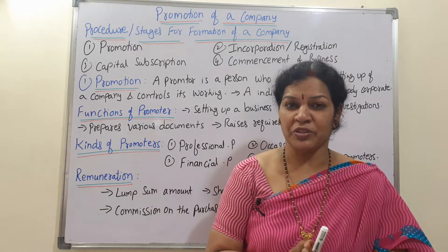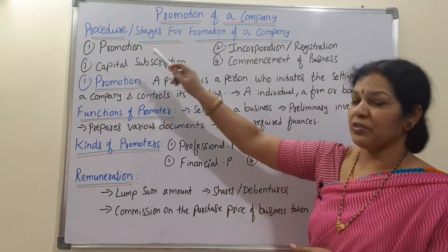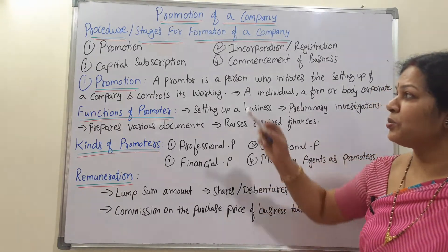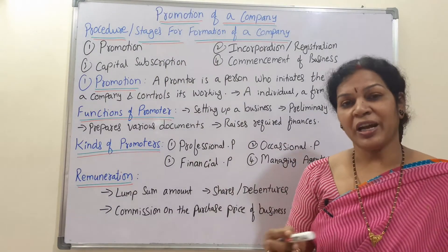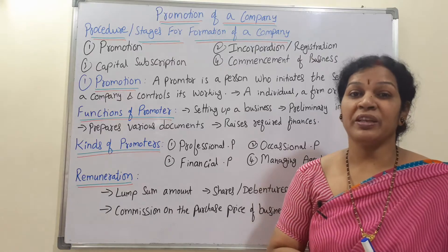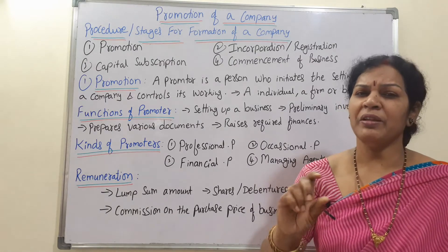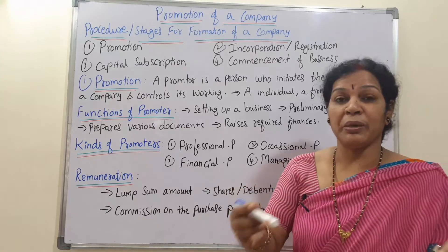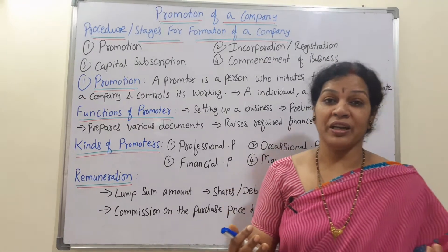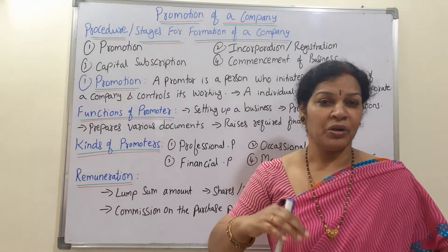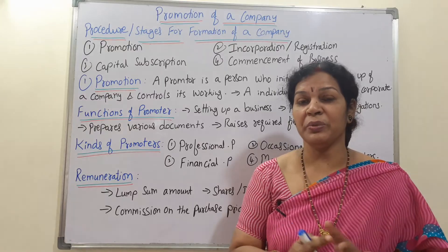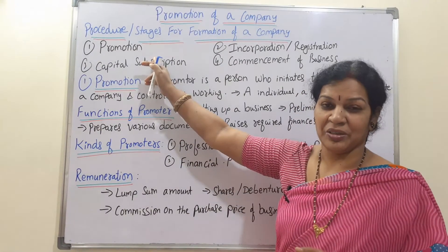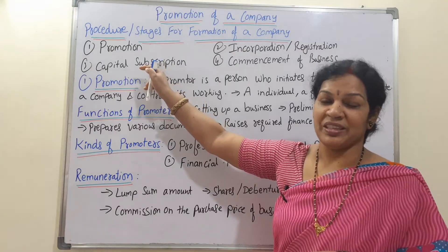If you see the procedure or stages of formation of a company, there are total four stages. The first one is promotion. Before starting the company, we need to promote it, and for this purpose we will be appointing some promoters. Promotion means making an awareness of what kind of company we want to start, what the products will be, where to start, and how much capital is needed — this is the initial practice.